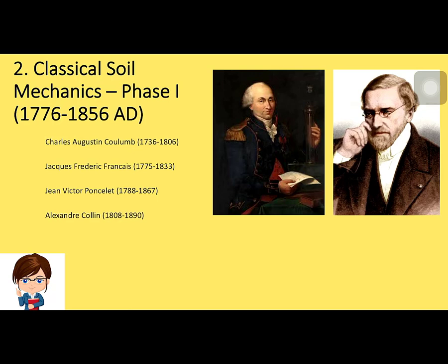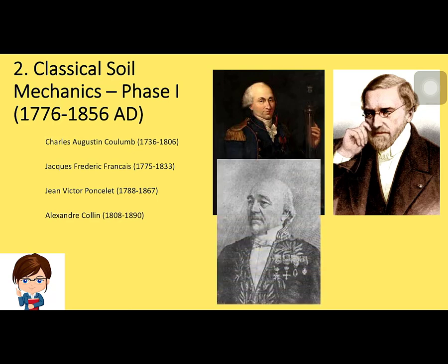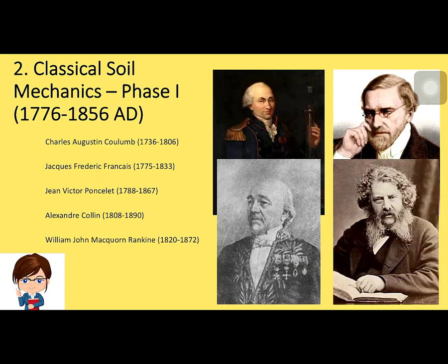Alexander Collin (1808–1890), an engineer, in 1846 provided details for deep slips in clay slopes, cuttings, and embankments. William John Macquorn Rankine (1820–1872), a professor of civil engineering at the University of Glasgow, published in 1857 a notable theory on earth pressure and equilibrium of earth masses. Rankine's theory is a simplification of Collin's theory.